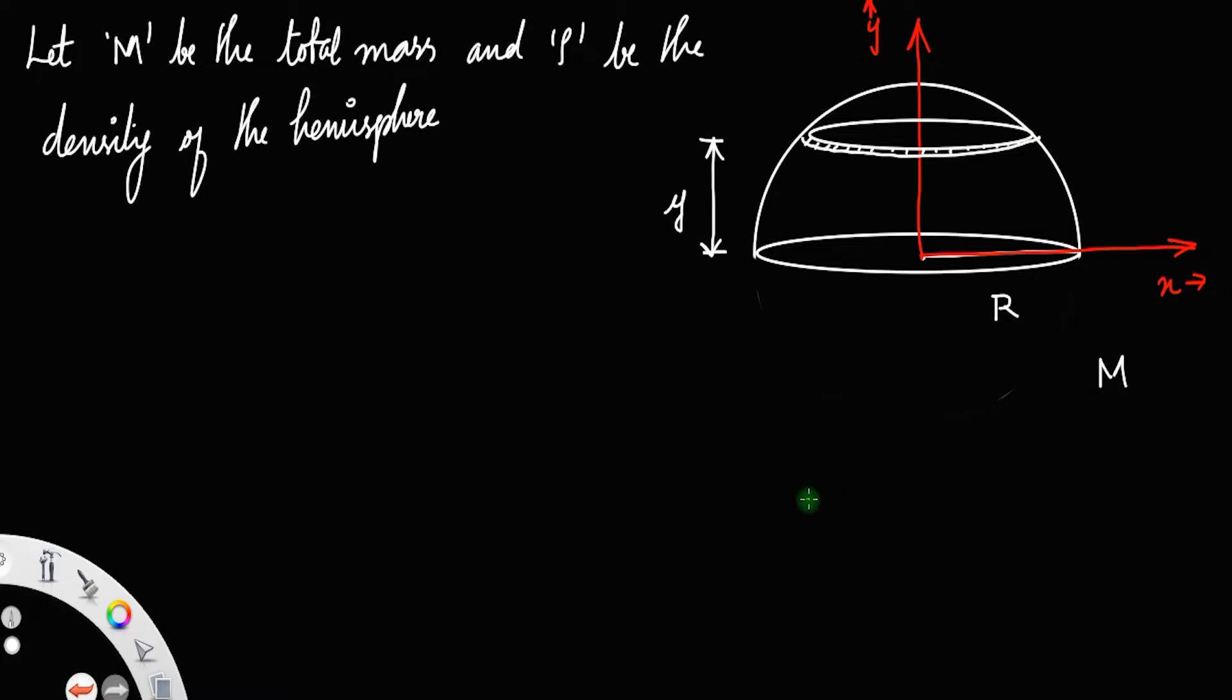If you draw the circular portion here, it will be like a disk with a thickness dy. This small thickness is equal to dy.